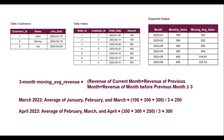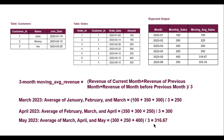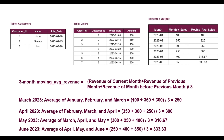For May, the moving average is the average of March, April, and May: 300 plus 250 plus 400 divided by 3, which is 316.67. For June, it is the average of April, May, and June: 250 plus 400 plus 350 divided by 3, which is 333.33. I hope you are clear on how the output was derived.